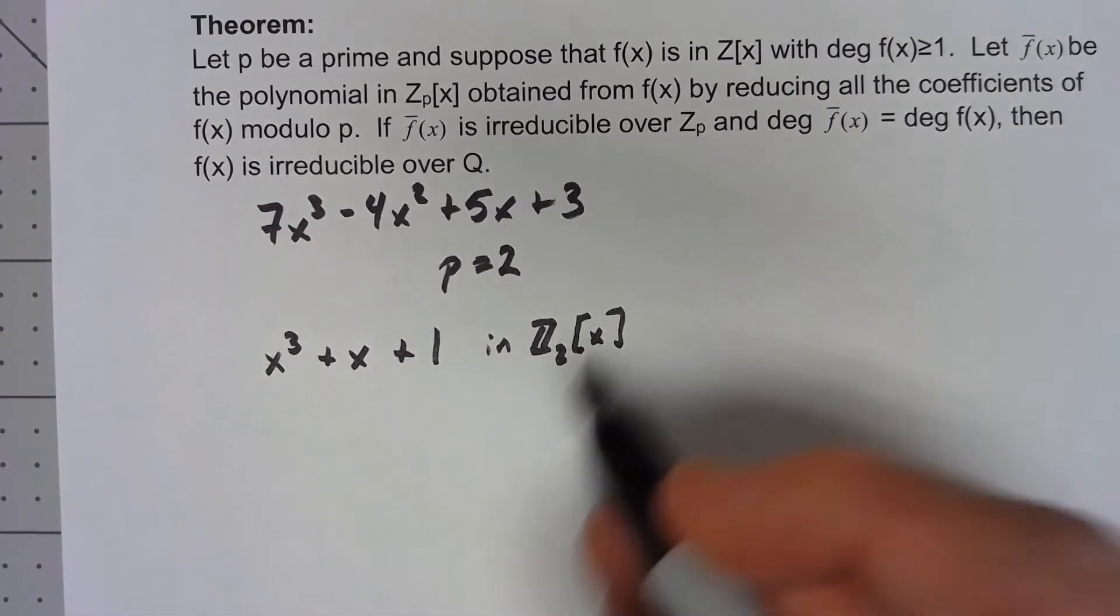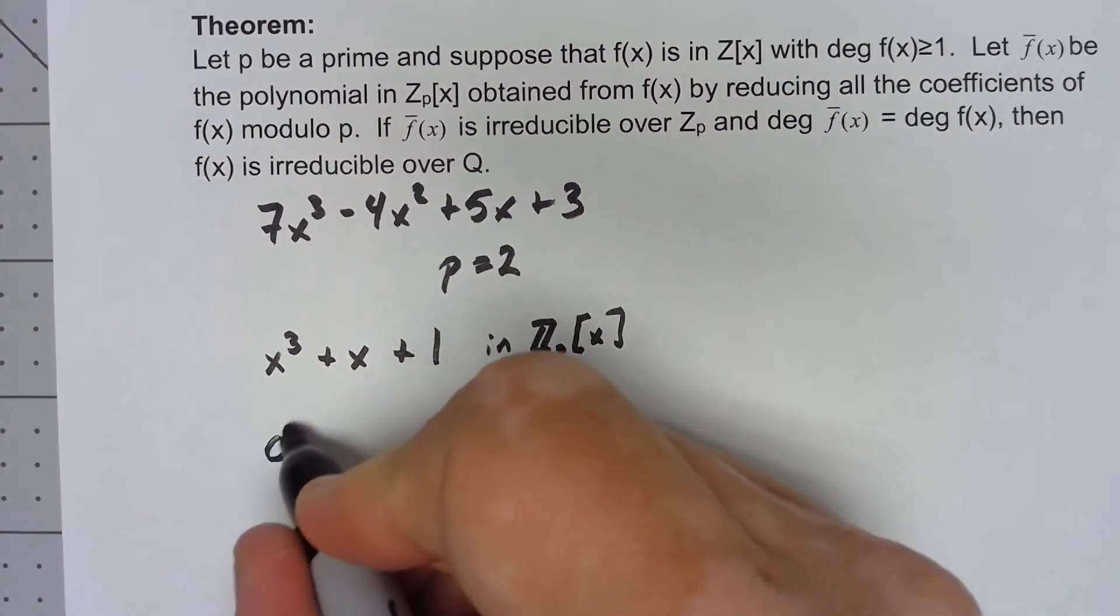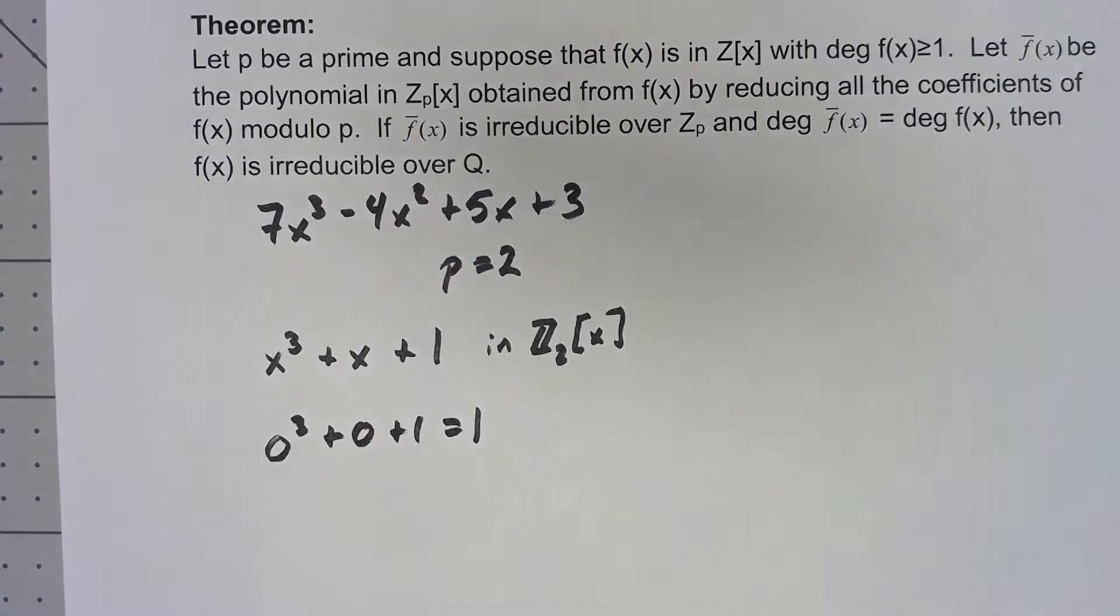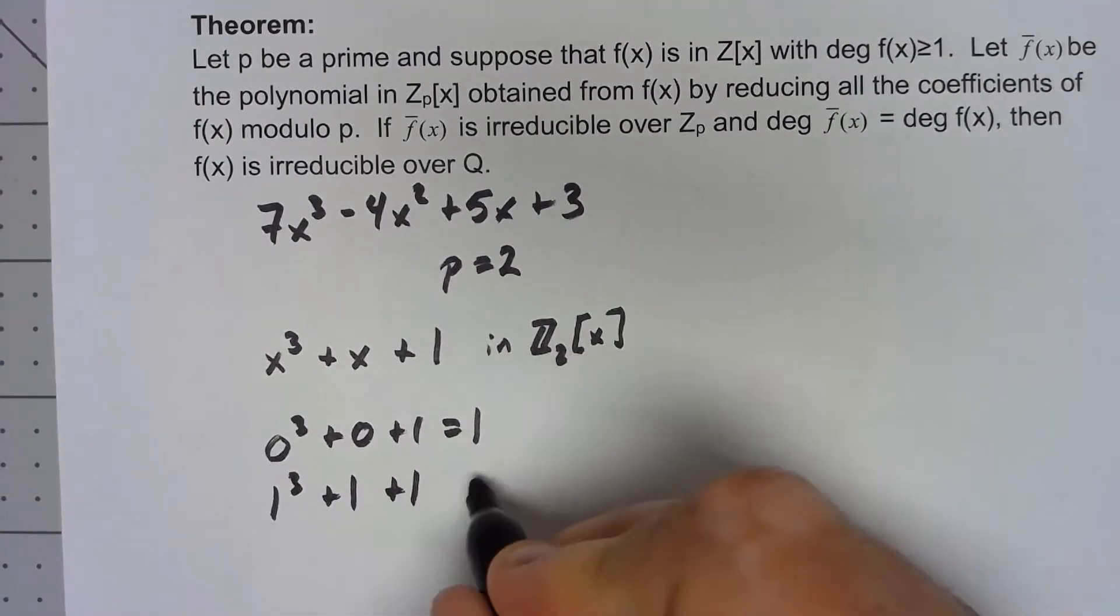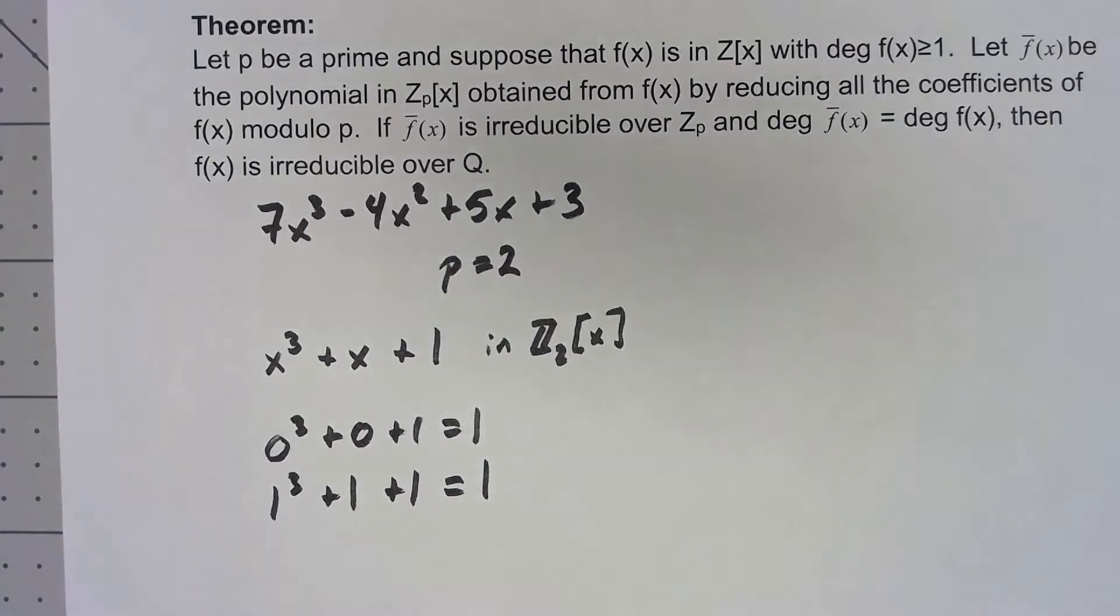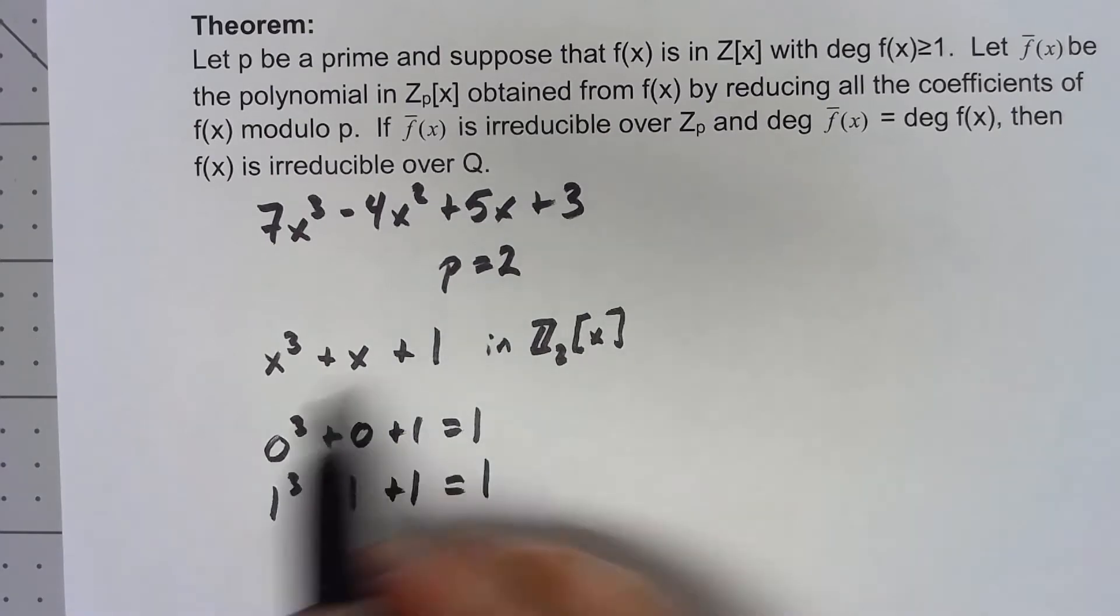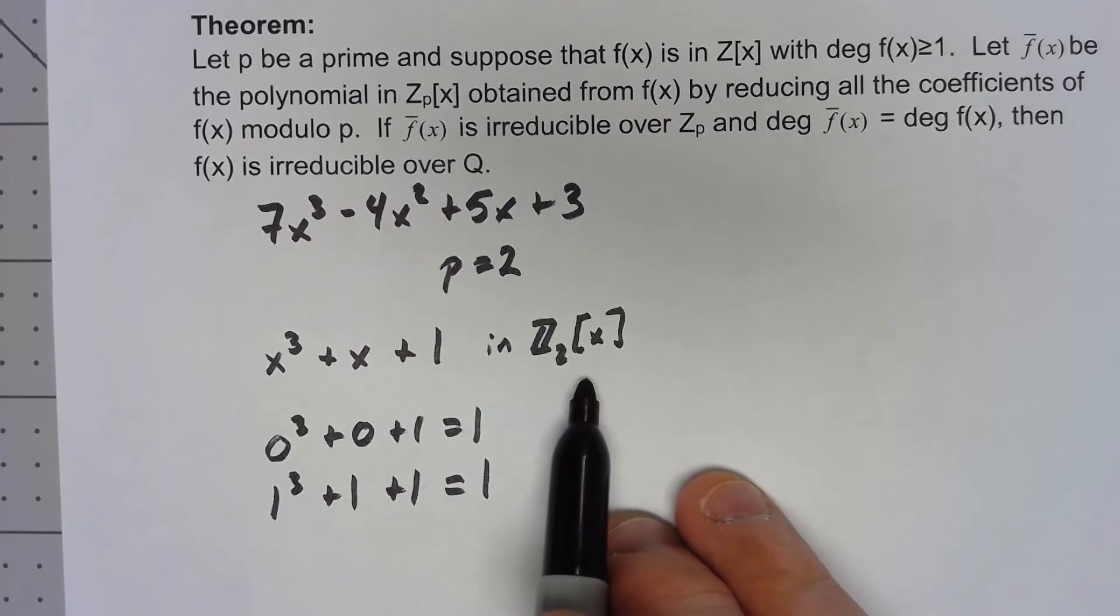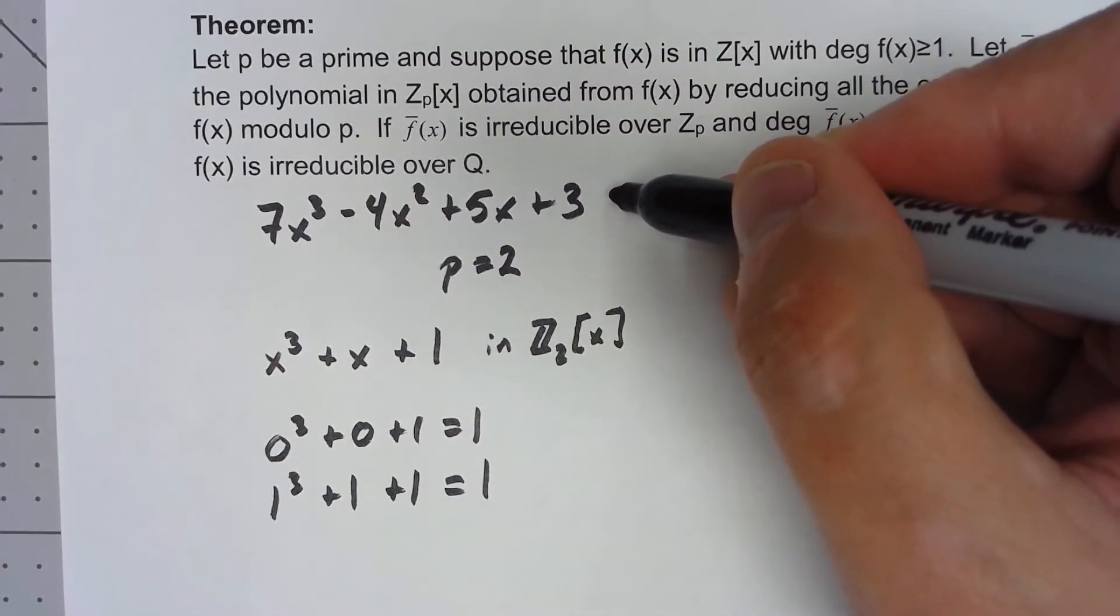So there's only two possibilities: 0 and 1. If I say 0³ + 0 + 1, I get 1. If I do 1³ + 1 + 1, again everything's mod 2, I get 1. So there's nothing that's a zero of this. So this is irreducible in Z₂[x], that must mean this is irreducible in Q.